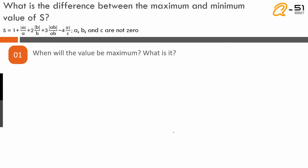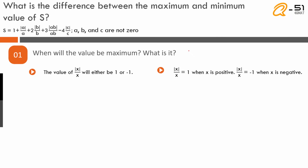Let us start with step 1: when will S be maximum? It will be maximum if we can make all terms positive, because the sum of all positive numbers gives the largest possible value. The key property: modulus of x over x is either 1 or minus 1. It is 1 when x is positive — for example, |5|/5 = 1. It is minus 1 when x is negative — for example, |−5|/(−5) = −1.